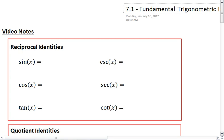Our first set are the reciprocal identities. You should already remember from Chapter 6 that cosecant is 1 over sine. Secant is 1 over cosine.